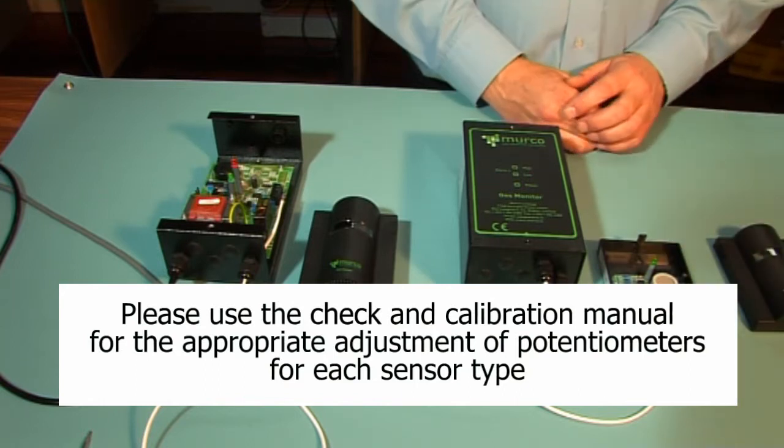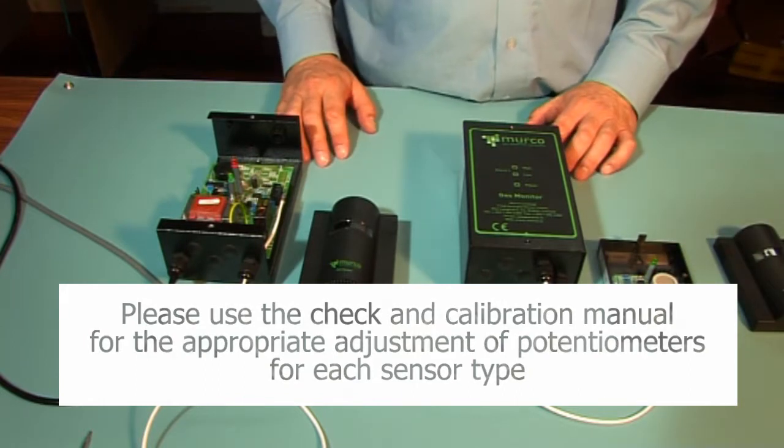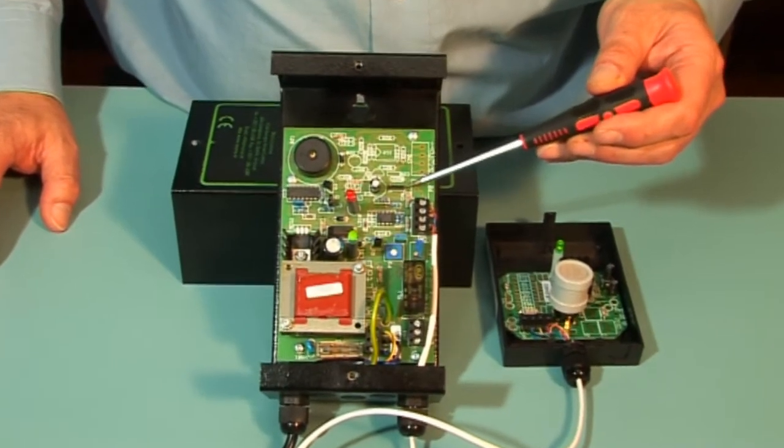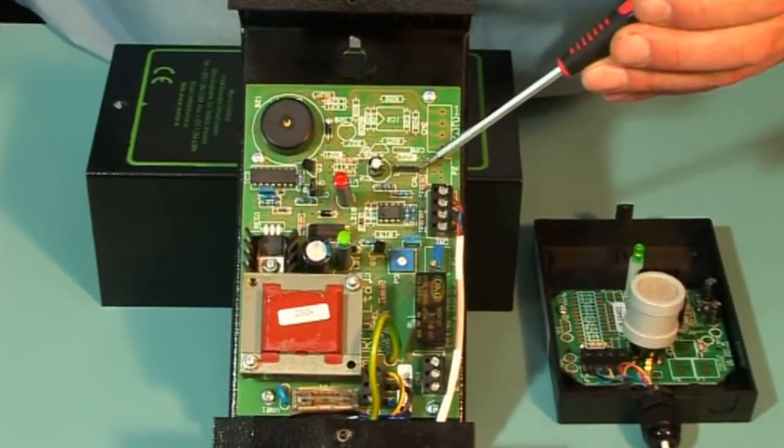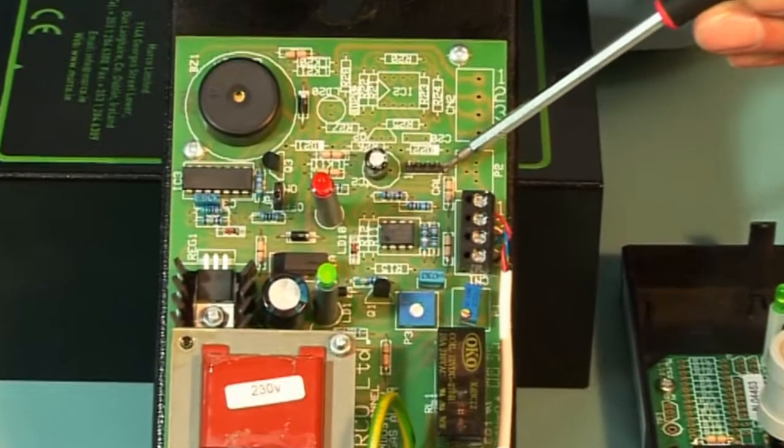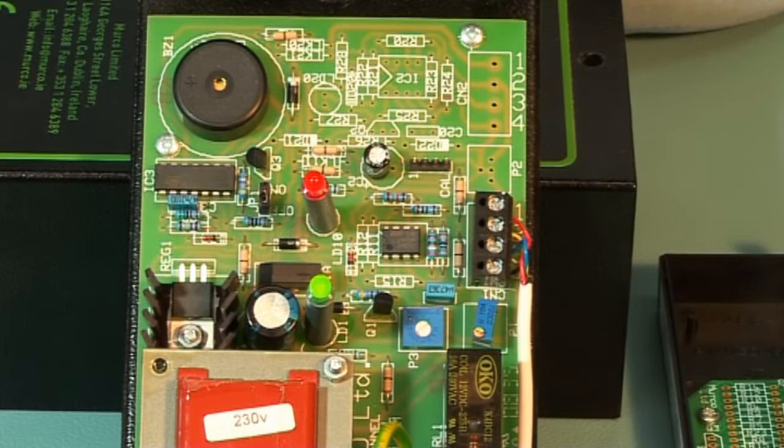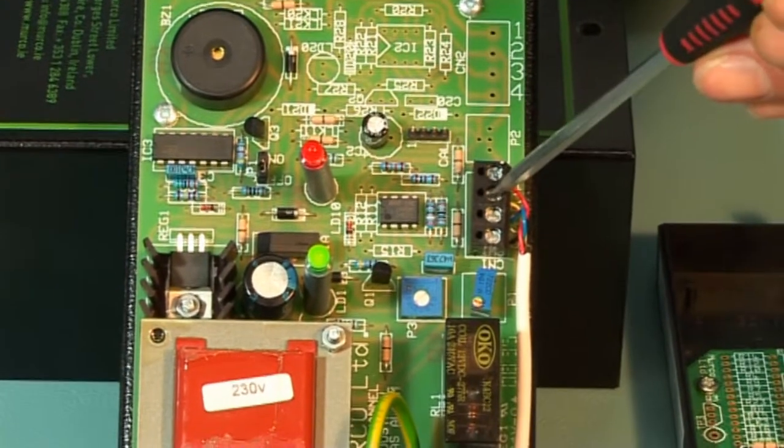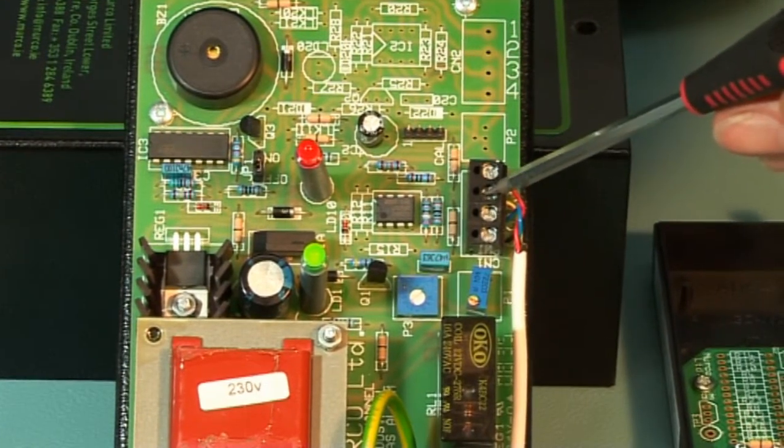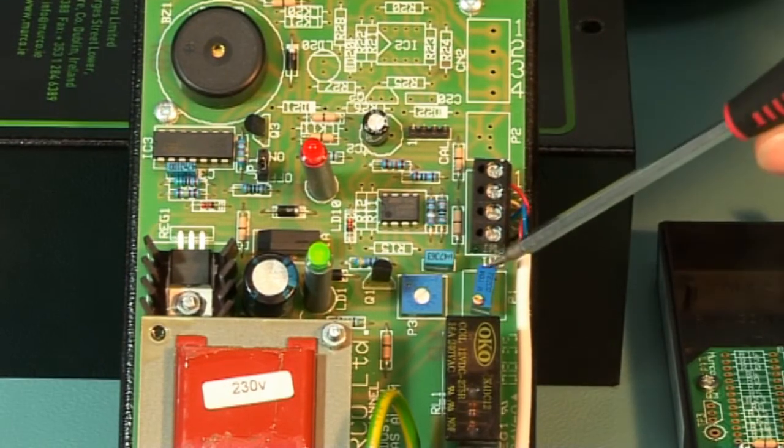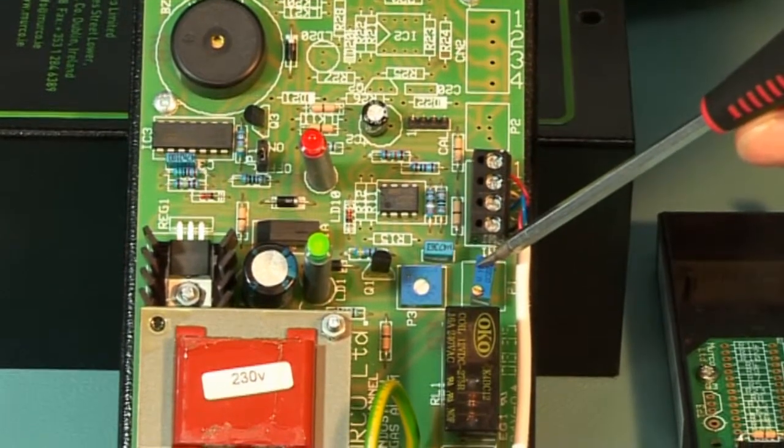For the one level systems, monitor ground or zero at pin 4 on the CAL header shown here on the controller. The standby voltage output in clean air can be monitored on pin 2 CN1. The adjustment for the standby voltage is by P1. The alarm voltage can be monitored on pin 1 of the CAL header and the adjustment is done at P3.